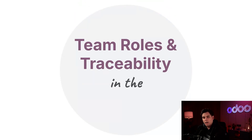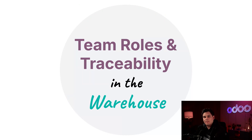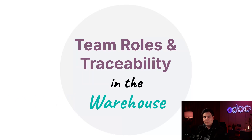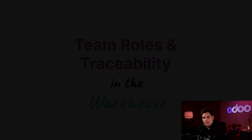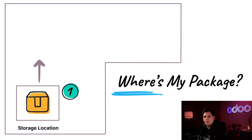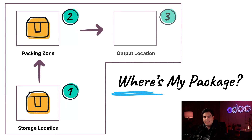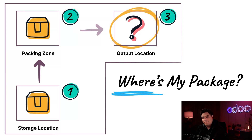Regardless of whether your warehouse has a ton of shelves or zones, or whether you have really complex and custom processes, what matters most is deciding how many steps your process should follow inside of Odoo. The level of complexity you choose should also enhance product traceability and clarify accountability. Imagine if a package gets lost between packing and output — if the packing team already validated their step inside of Odoo, meaning they handed the package off to an output team, then we actually know who's responsible for it.